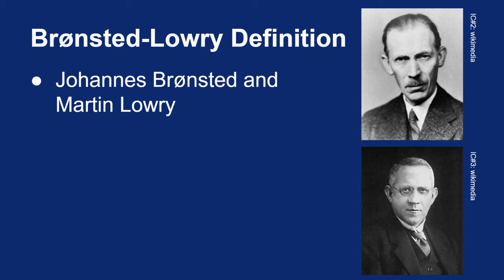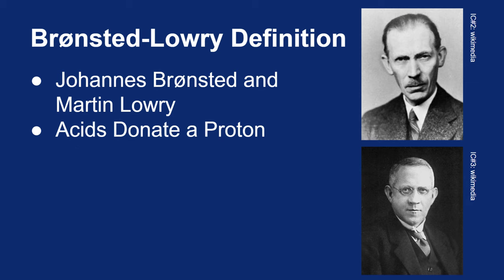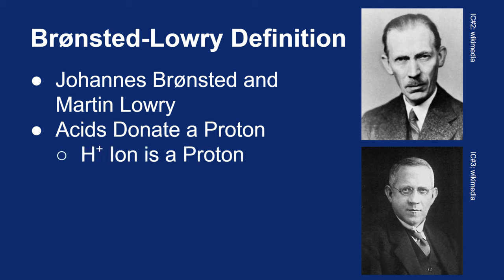Instead of saying that acids are anything with H+, Bronsted and Lowry say that acids donate a proton in a reaction. The wording is different, but this is actually fundamentally the same as the Arrhenius definition, because a hydrogen plus ion — an H+ ion — is a proton. A hydrogen atom is just a proton with an electron spinning around it, so if you make the H+ ion, you've removed the electron and are just left with a proton.